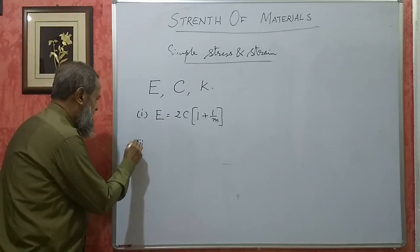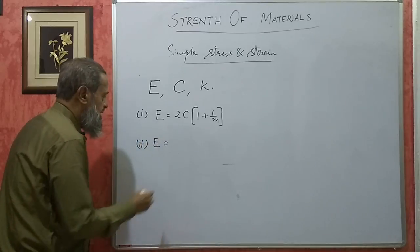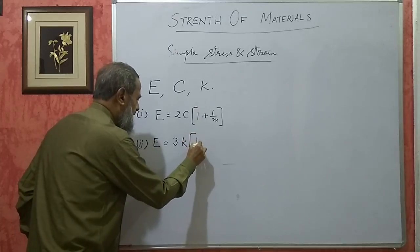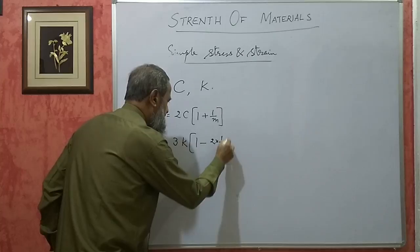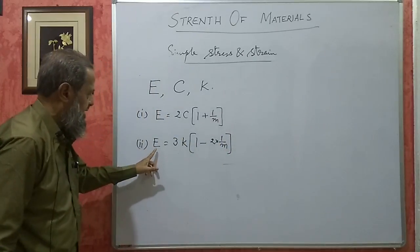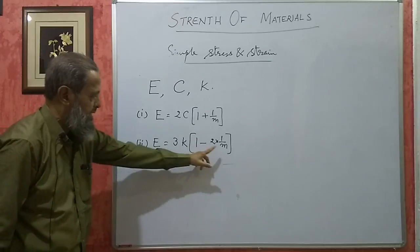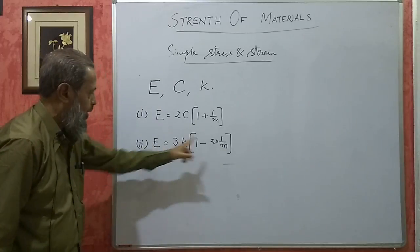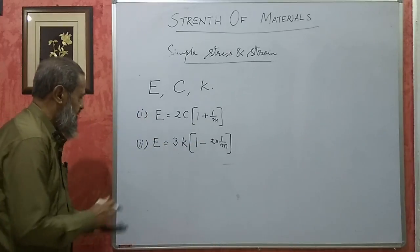The second relationship is E = 3K(1 − 2/M). This relationship connects Young's modulus, bulk modulus, and Poisson's ratio. Out of these three, if we know any two, the third one can be found out.